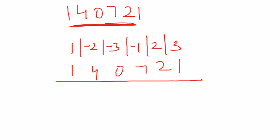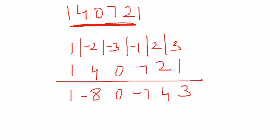Now multiply each digit with the corresponding digit of the pattern. So 1 × 1 = 1, 4 × -2 = -8, 0 × -3 = 0, 7 × -1 = -7, 2 × 2 = 4, and 1 × 3 = 3. Now just add all the numbers and see what the output is.